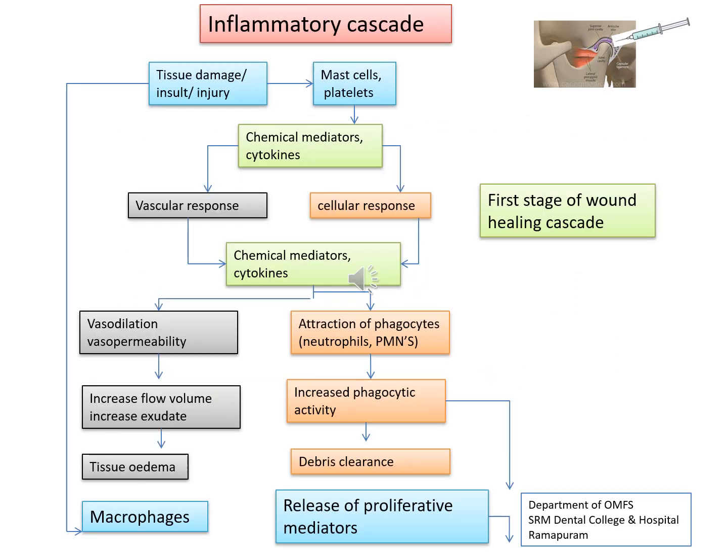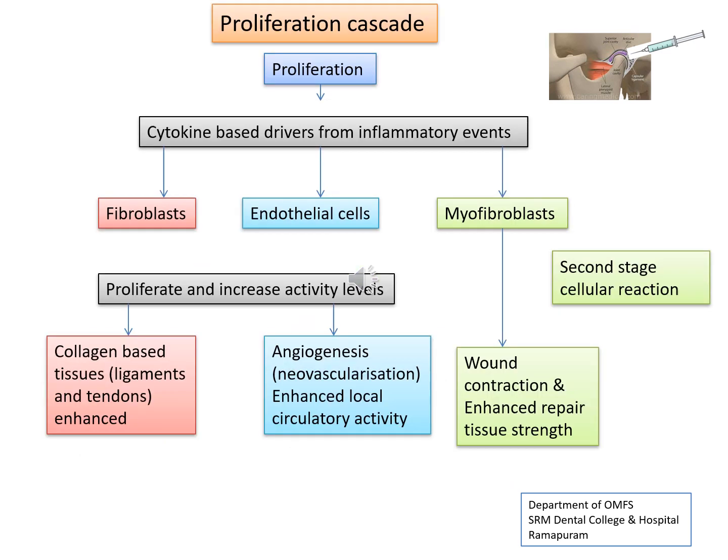The first stage of the wound healing cascade is the inflammatory phase, which is initiated after the prolotherapy injection. This causes mast cell and platelet activation, precipitating vascular and cellular responses, which in turn releases proliferative mediators and macrophages. In the second stage, a cellular reaction takes place in which various cells, including fibroblasts, endothelial cells, and myofibroblasts, form new blood vessels and ultimately lay down collagen, which enhances tissue repair and strength.